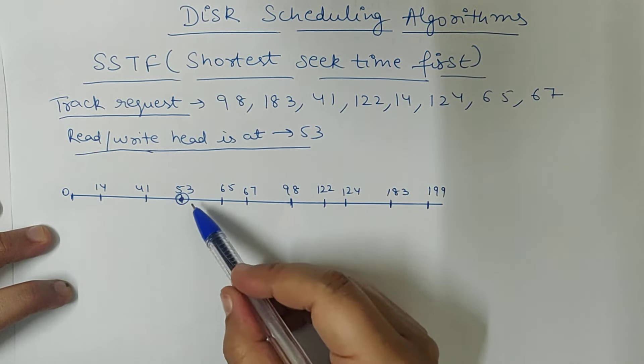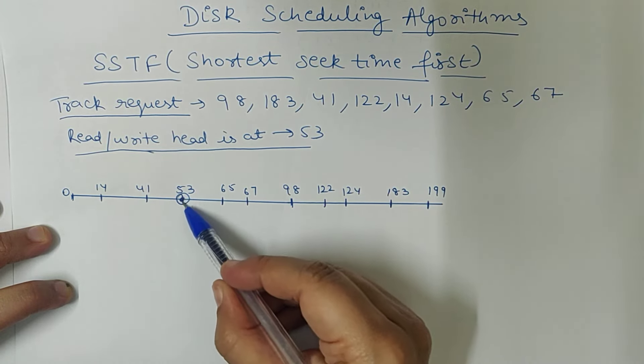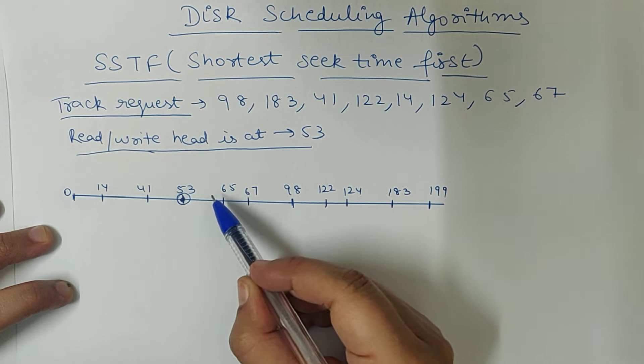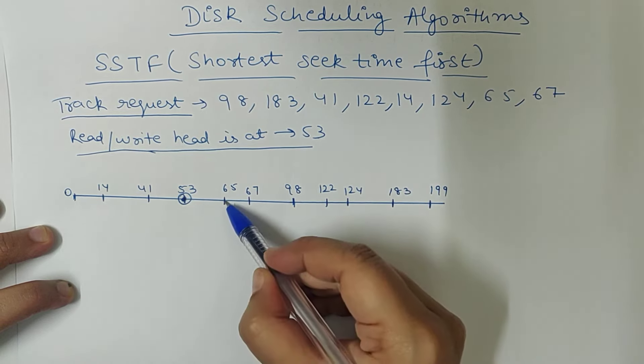So, seek time, what do you mean seek time? Now, the current read write head is here. So, go to that track, which is the nearest to 53. Like, 65.